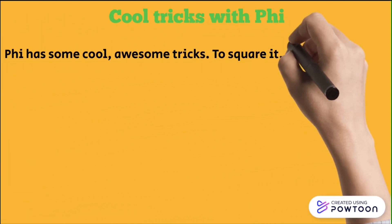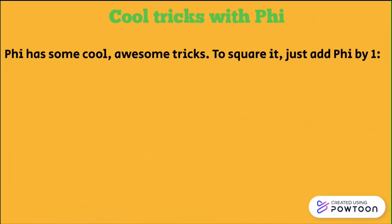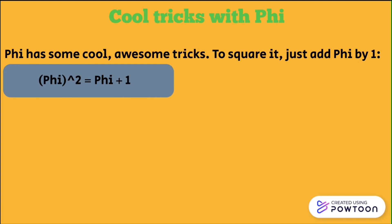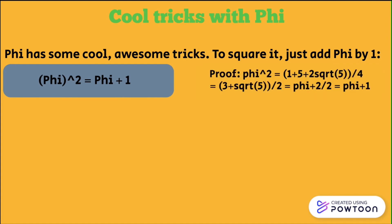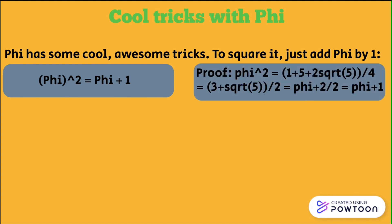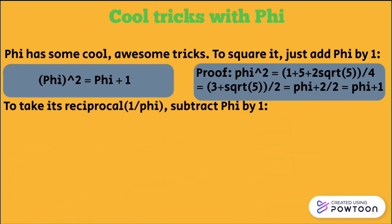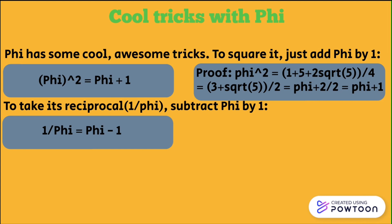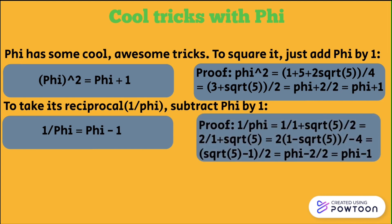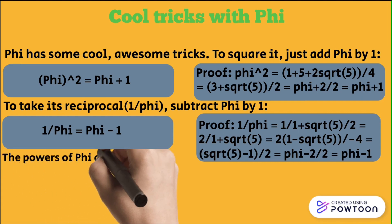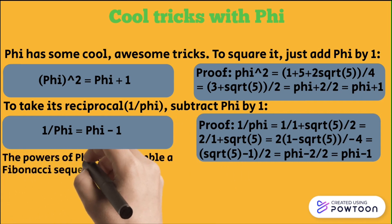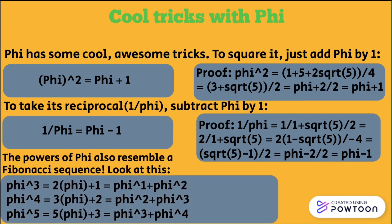Phi has some cool tricks. To square it, just add 1 to phi. To take its reciprocal, 1 over phi, subtract 1 from phi. The powers of phi also resemble a Fibonacci sequence — look at this.